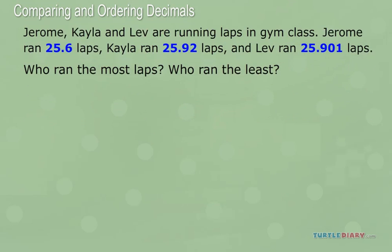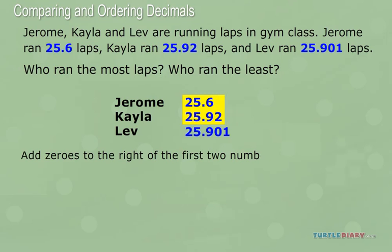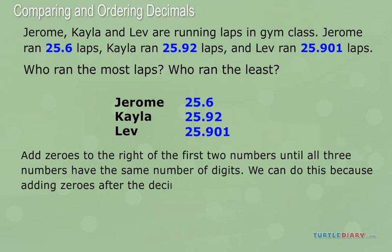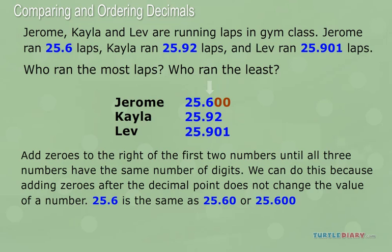Let's line up the numbers, just like we did in the last problem. If it helps you, add zeros to the right of the first two numbers until all three numbers have the same number of digits. We can do this because adding zeros after the decimal point does not change the value of a number. 25.6 is the same as 25.60 or 25.600. In each case, we have two tens, five ones, and six tenths. Here's how we add zeros to the numbers in this question.